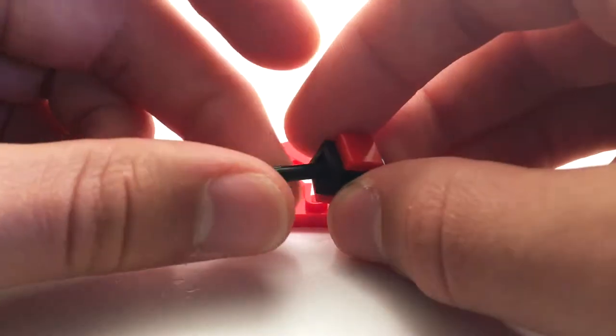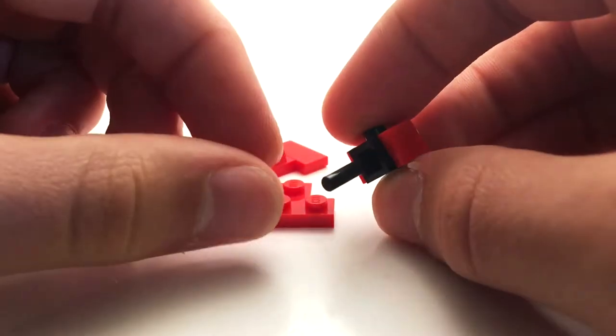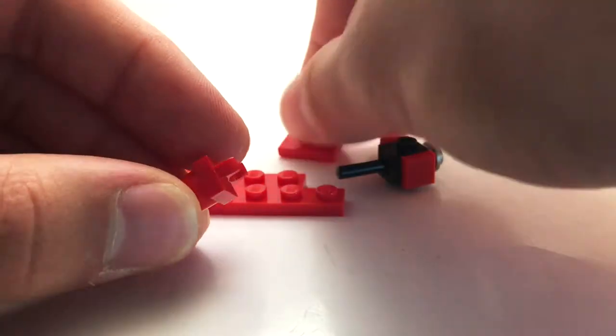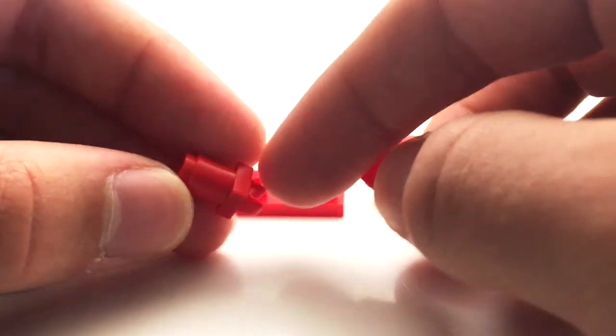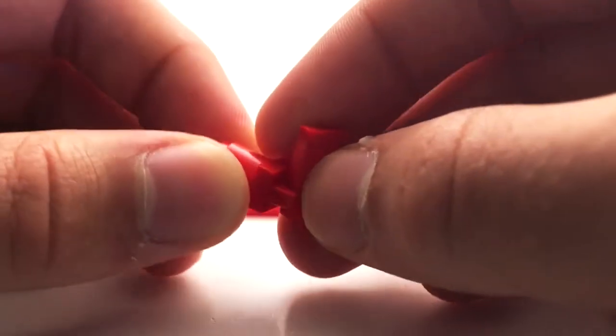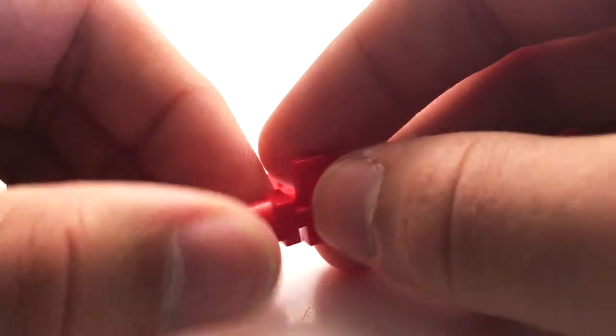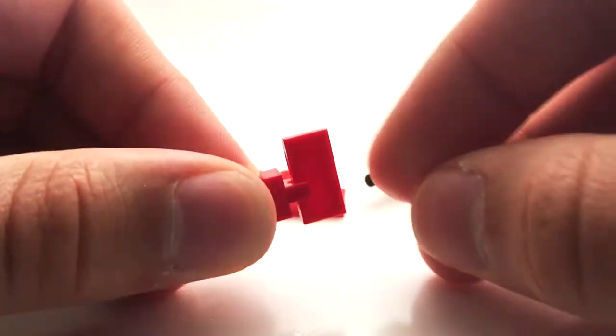We have this one by three long bar that slips into the back there. We can build up the tail section using this one by one round brick as well as this clip, and we can clip that clip around this one by two plate.